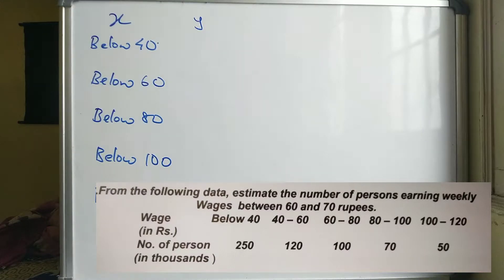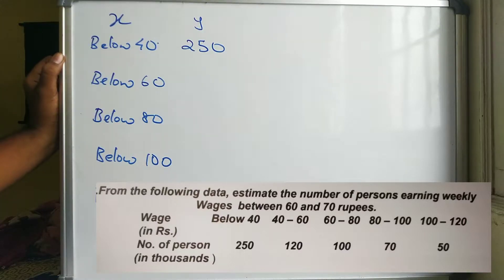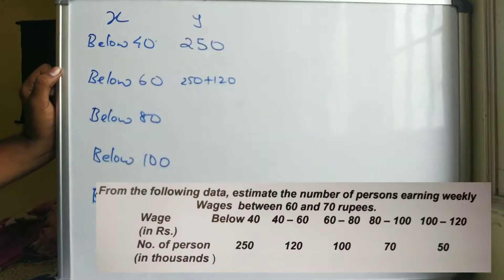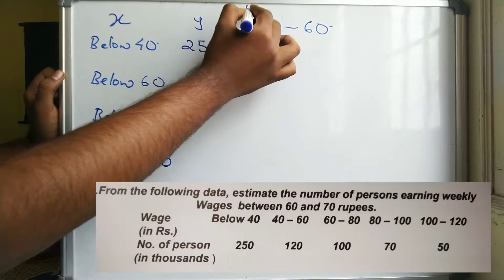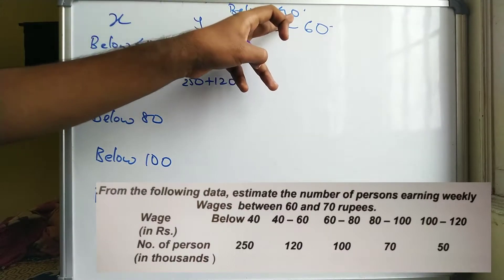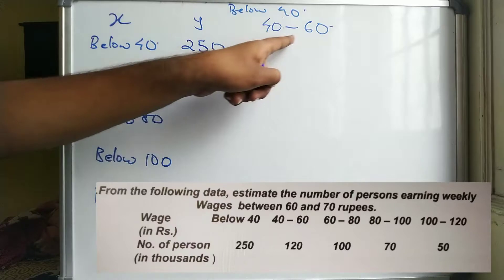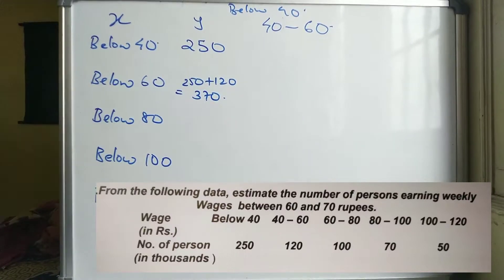For y values, which are number of persons: below 40 is given as 250. For below 60, the interval 40 to 60 has 120 persons, so below 60 = 250 + 120 = 370. For below 80, we add 60 to 80 interval which has 100 persons: 370 + 100 = 470.